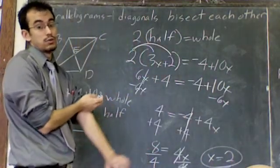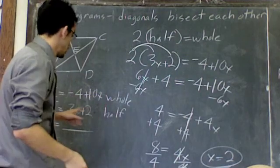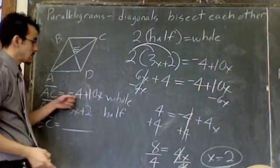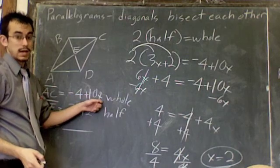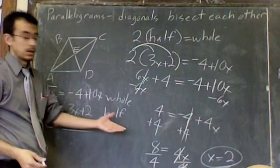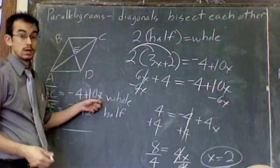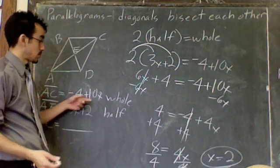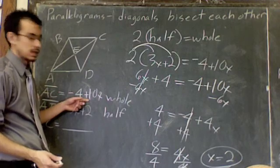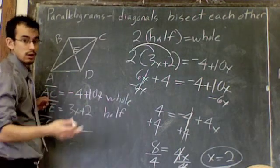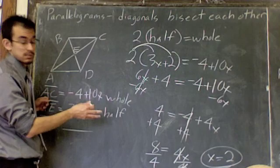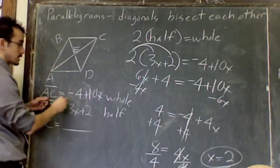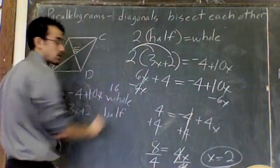All you have to do now is plug X back in. This said for AC it was negative 4 plus 10 times X. We know X is 2. So this says 10 times 2, 20. Negative 4 plus 20. Well, that's positive 16. So AC is 16 units long, inches or feet, whatever it happens to be. In this particular problem, so AC is 16. We know that whole length is 16.